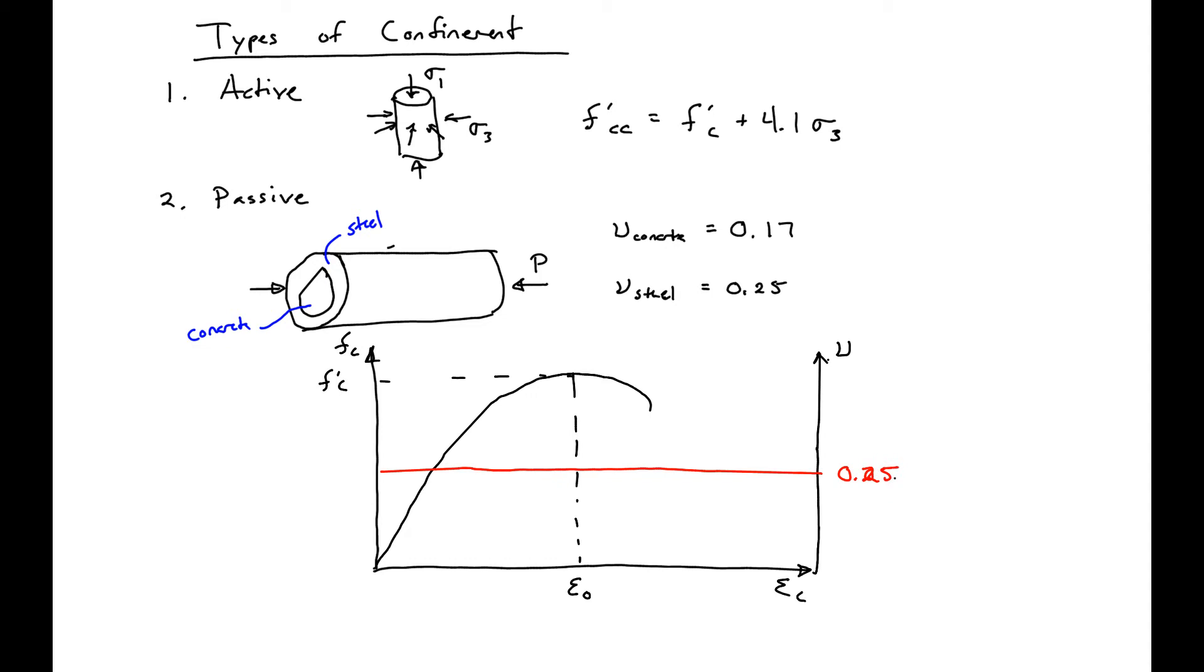Our concrete is going to start with a Poisson ratio below this. So it'll start with a Poisson ratio 0.17. And what's going to happen is, as we approach the ultimate strength, our Poisson ratio is going to spike. And it's going to start to go near linear.